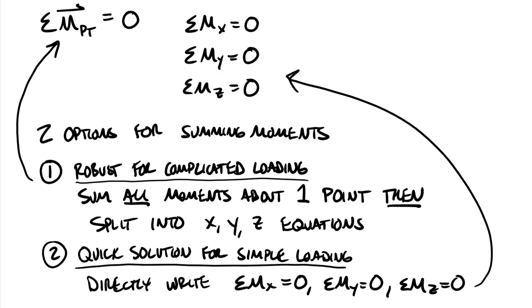There's no right or wrong answer as to which option you choose. Option one relies on determinants and cross products — very robust and methodical. The quick solution allows you to use the right-hand rule on three-dimensional problems and write out the perpendicular distances and force magnitudes into equation form without going through a full determinant. On three-dimensional problems, probably 70% of the time I'll go with option one as my default. If I can visualize what the forces are doing, I may jump into method two.